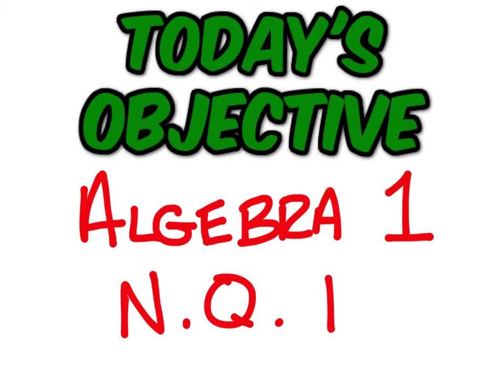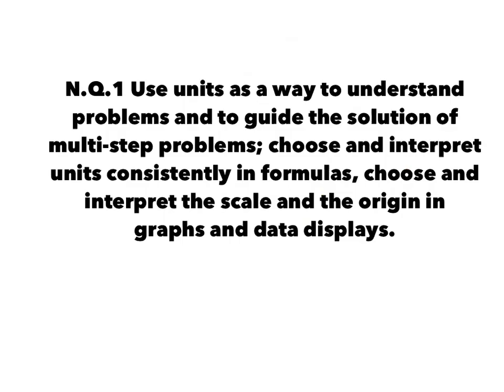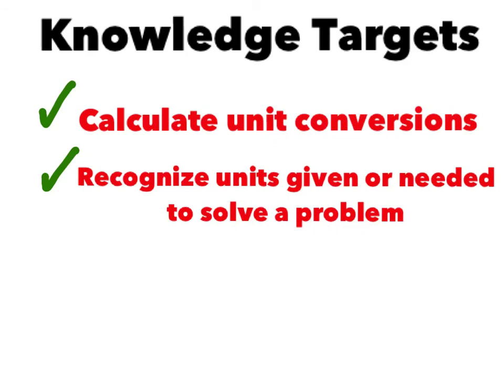There's a whole new set of objectives for everybody throughout the country this year. It's called Common Core. And the first objective you're going to go over today is Algebra 1 in Q1, Numbers and Quantity. You do not have to write this down because I will post it on YouTube so you can look at it there. And I will be putting them around the room as the days go along. The first one for today is to use units as a way to understand problems and to guide the solution of multi-step problems. Choose and interpret units consistently in formulas. Choose and interpret the scale and the origin in graphs and data displays. So after we finish, you should be able to calculate unit conversions and recognize units given or needed to solve a problem. Lessons don't last just one day. This one may be two or three.